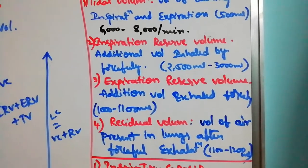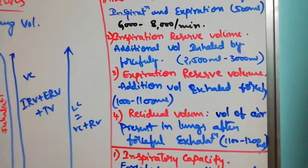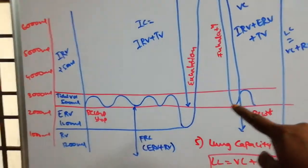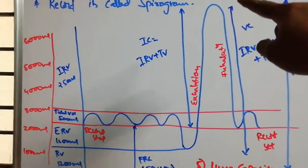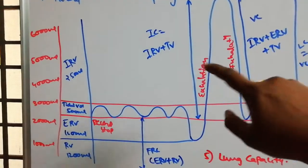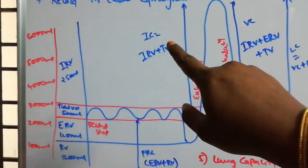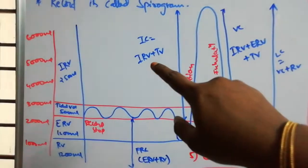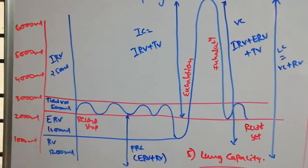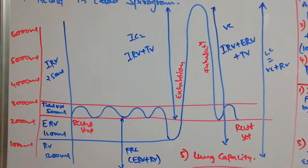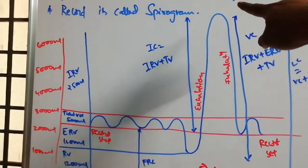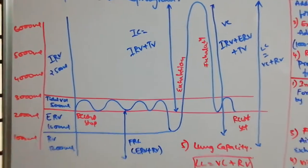Next are the lung capacities. First is Inspiratory Capacity (IC), which considers the total volume of forceful inhalation. IC is the normal breath followed by maximum forceful inhalation — that is, TV followed by IRV is called IC.